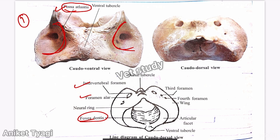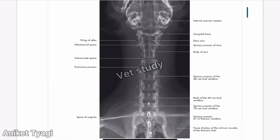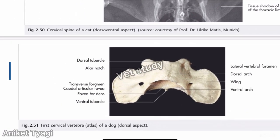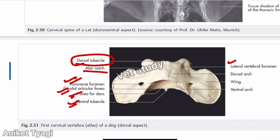The atlas of the ox is now complete. Looking at the x-ray, you can see the wings of the atlas, the atlanto-axial space, and where the occipital condyle attaches. In the dog, the alar notch is just a notch, and the features include the dorsal tubercle, transverse foramen, caudal articular fovea, fovea dentis, ventral tubercle, ventral vertebral foramen, dorsal arch, and ventral arch. These features differ slightly species to species.